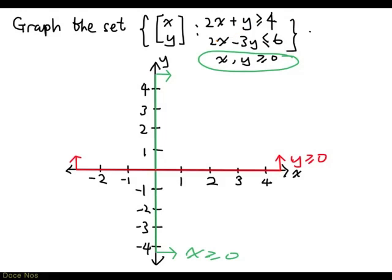2x plus y greater than or equal to 4 and 2x minus 3y less than or equal to 6. Well, let's focus on something we know how to do. For example, if we look at the equation instead of the inequality, 2x plus y equal to 4, that defines a line.